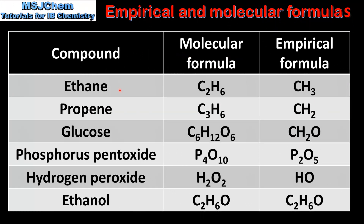Starting with ethane, which has the molecular formula C2H6 and the empirical formula CH3. Next is propene, which has the molecular formula C3H6 and the empirical formula CH2.